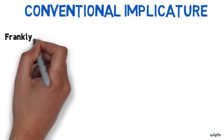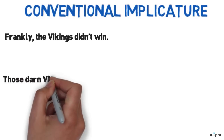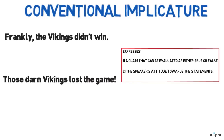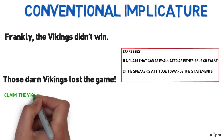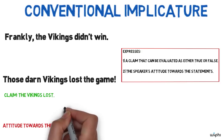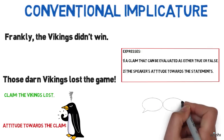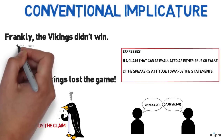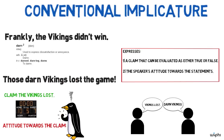For example, sentences like Frankly, the Vikings didn't win, or Those darn Vikings lost the game are used to express truth-evaluable statements as well as a speaker's attitudes toward those statements. In the second sentence, the speaker has made a simple claim about the Vikings losing a game, but has also conveyed an emotion — that the speaker is frustrated or angry over the Vikings having lost. This communicated emotion is important in understanding the speaker's feelings, but it's not important to the truth conditions of the claim. All that matters to the truth conditions is whether or not the Vikings lost the game. This kind of emotive meaning is directly associated with the word darn — it's its conventional meaning — but it doesn't enter into the truth conditions of the sentence. Many related words can be analyzed in terms of conventional implicature.